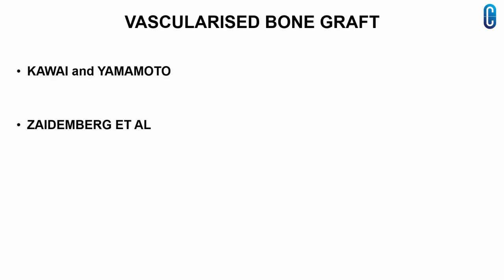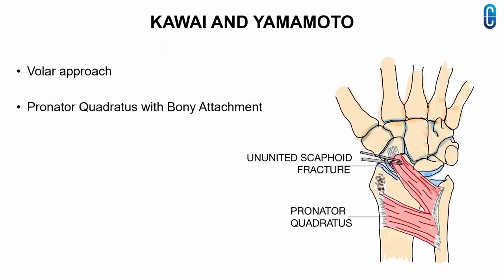We come to vascularized bone grafting techniques, which include the Kawai and Yamamoto technique and the technique by Seidenberg et al. In the Kawai and Yamamoto technique, a portion of the pronator quadratus tendon along with its distal bony attachment over the radius is harvested and placed over the fracture ends and held in position, as shown in the figure.